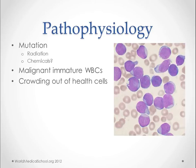The cells that are growing out of control are the lymphoblasts. You can tell in this picture that these are lymphoblasts and not lymphocytes because they're bigger, and you can see a little bit more cytoplasm. These lymphoblasts are crowding out all the healthy cells, and this is happening in the bone marrow as well as the peripheral blood.